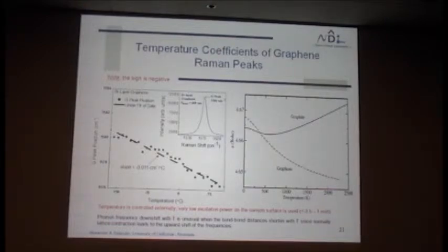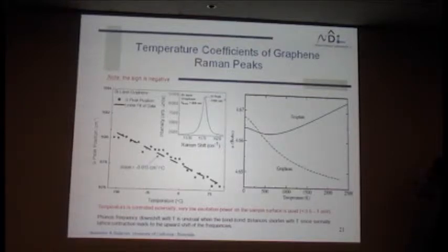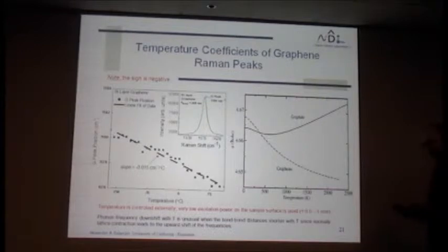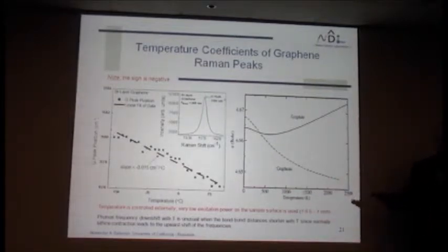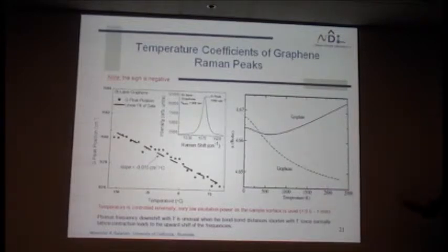The reason why is that you can view — so this is the graphene plane — if you increase temperature, you have these out-of-plane vibrations. When you have out-of-plane vibrations, you're kind of pulling atoms in-plane together. I think it was also called a leaf-sheet membrane effect or something like that. And because of that, if you have a shrinkage in the in-plane direction, that should normally go to the blue side — shifting to higher wave numbers.